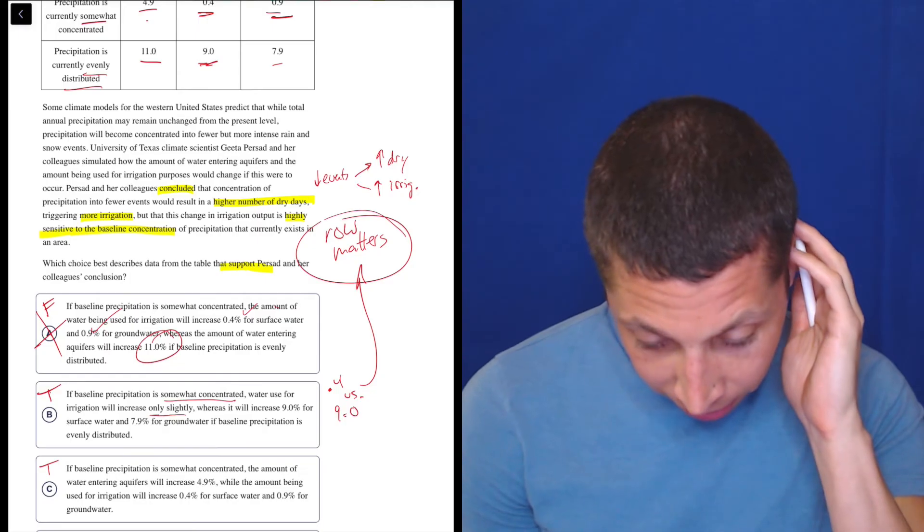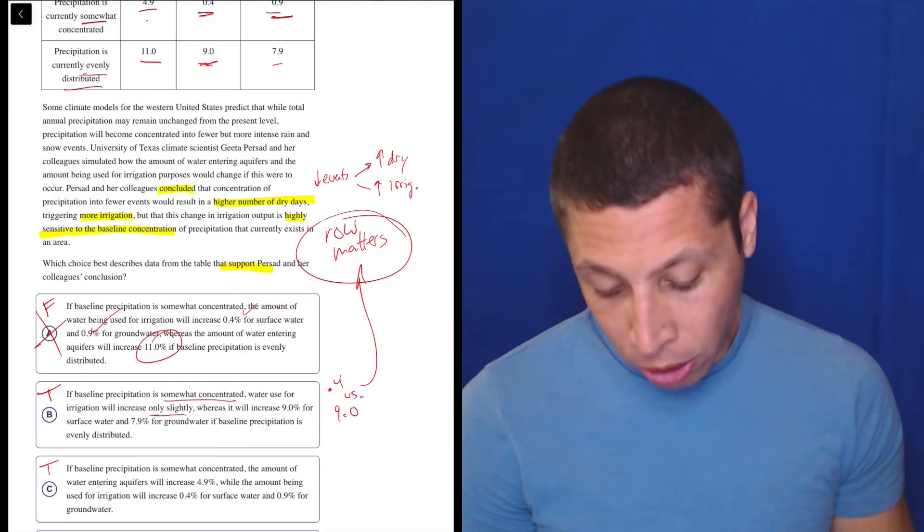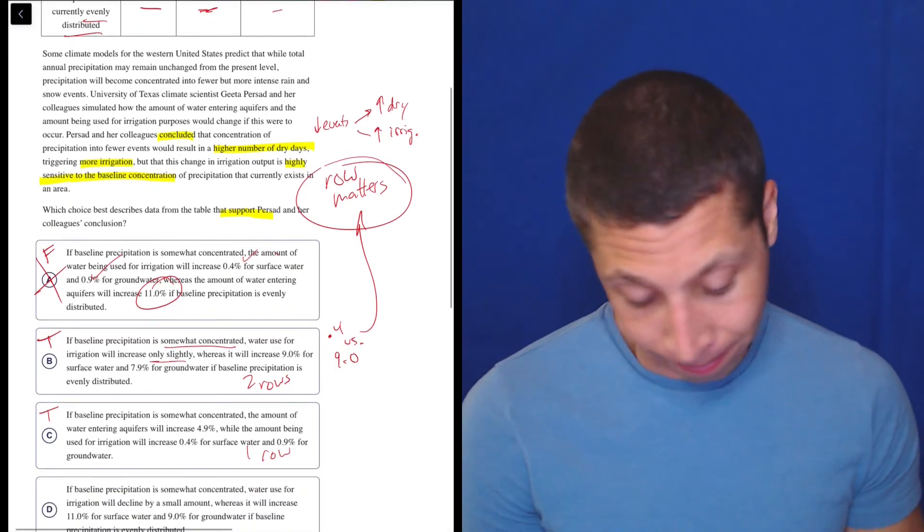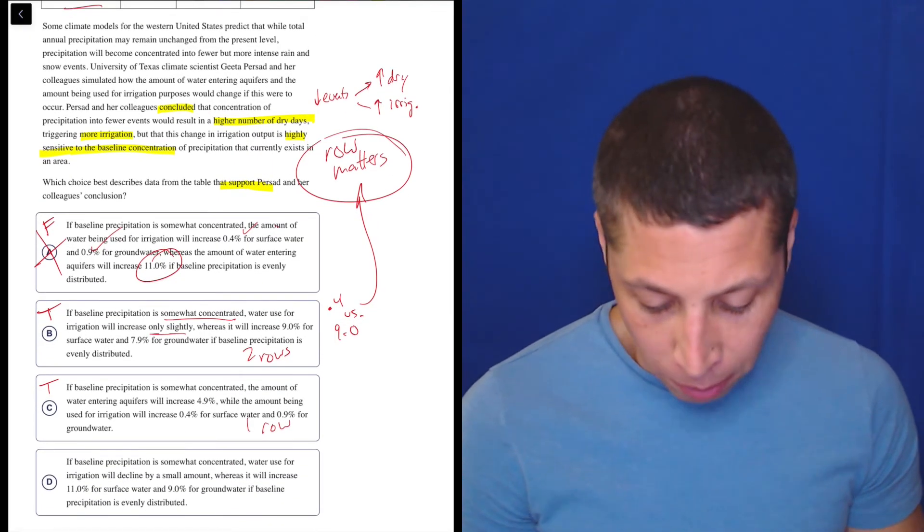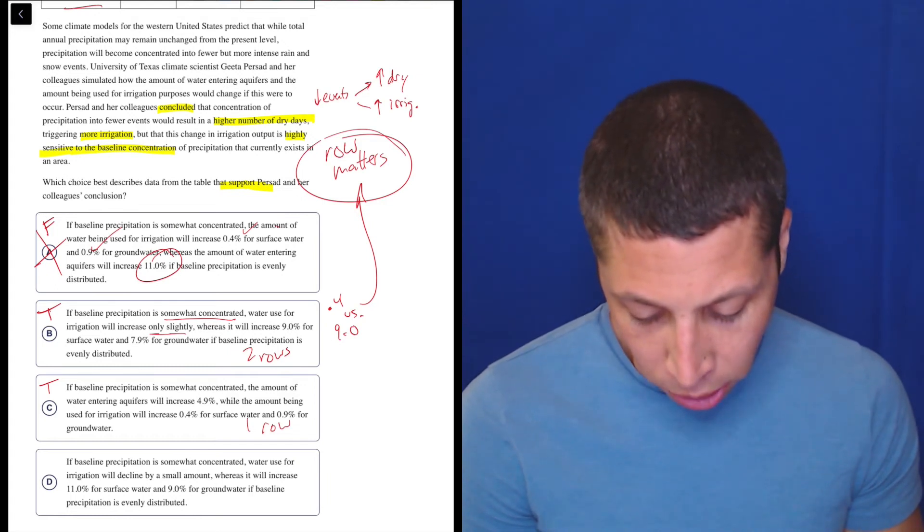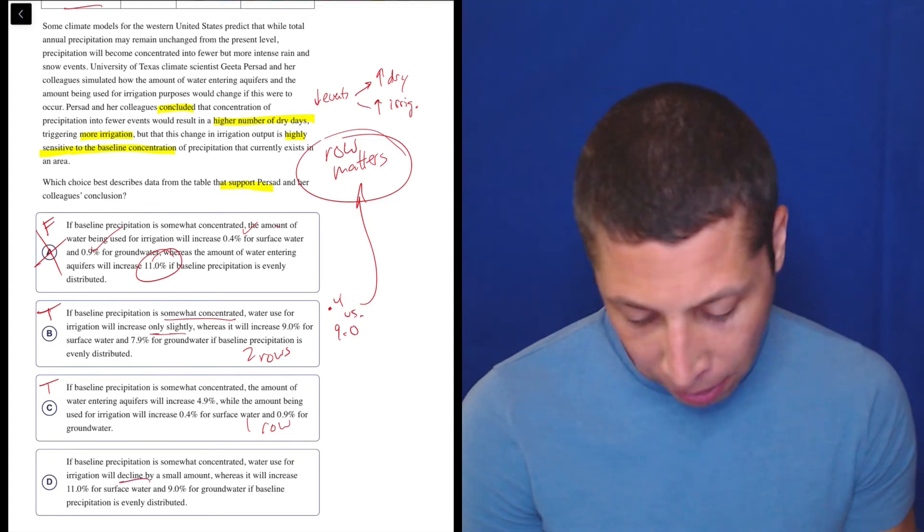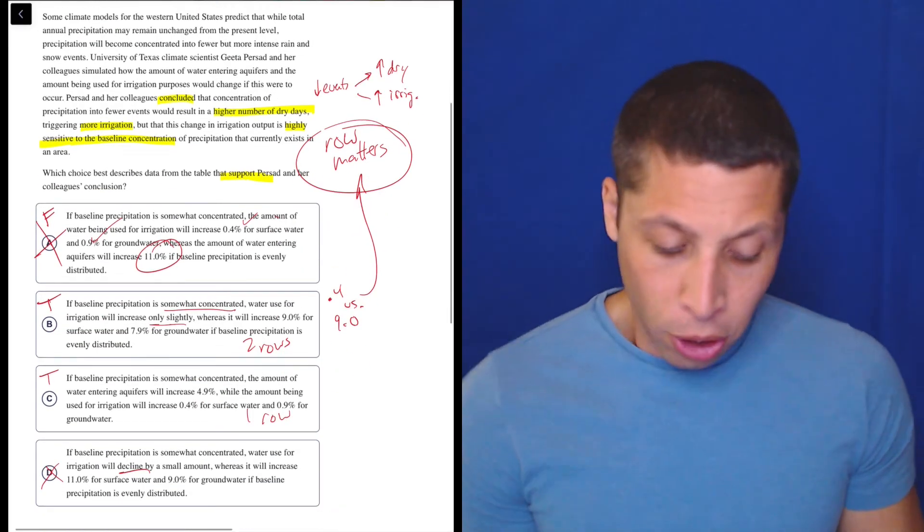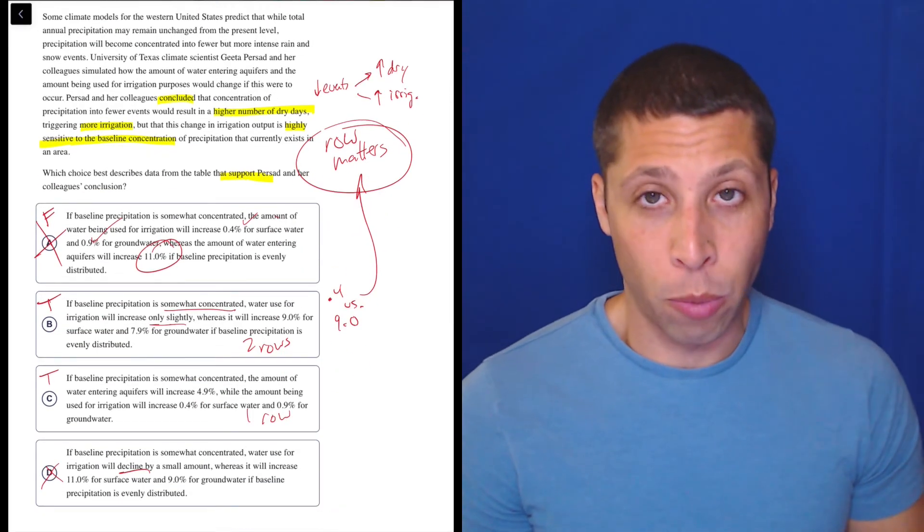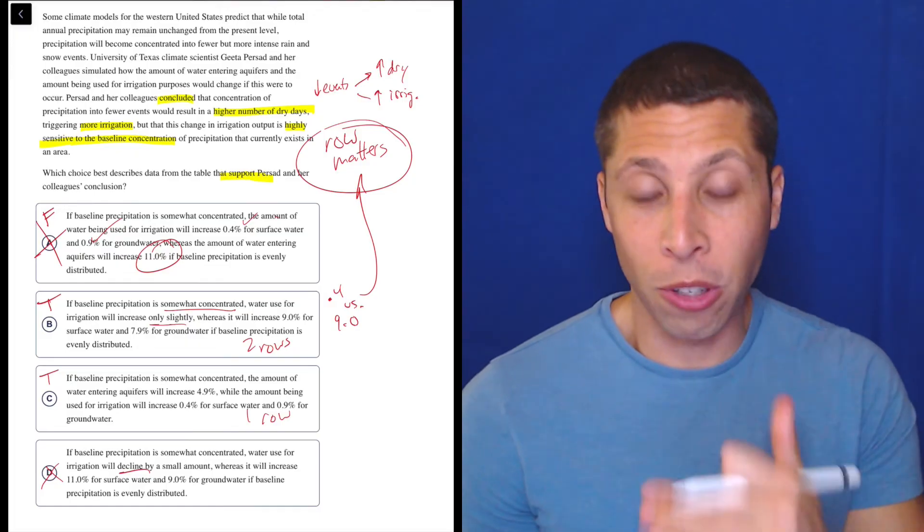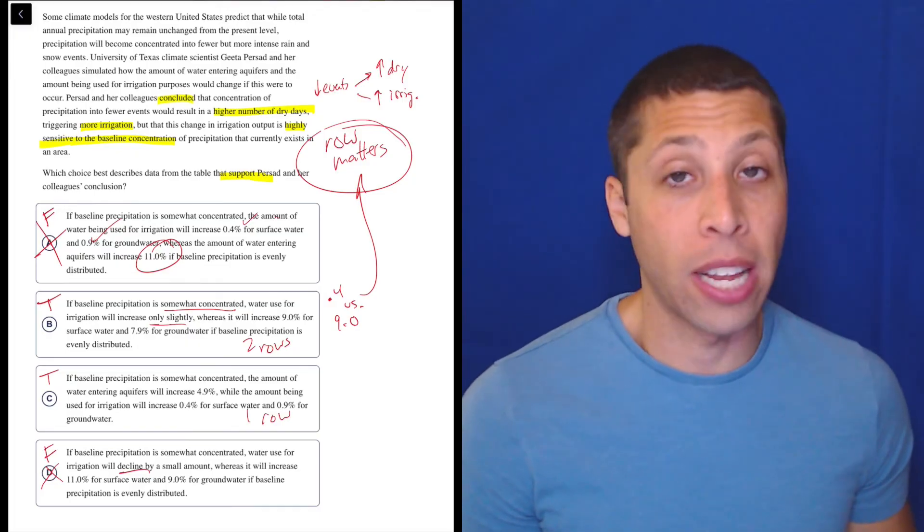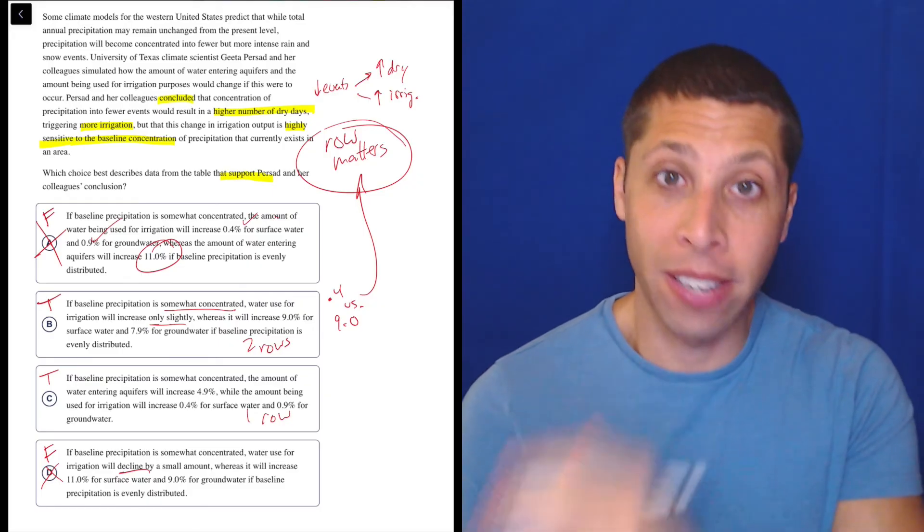But it's just only talking about one row, whereas this is talking about two rows. One row, two rows. So they're both true, but I don't know, let's look at D. If baseline precipitation is somewhat concentrated, water use for irrigation will decline by a small amount. No, there's no decline. So done. So this sometimes happens with these hard ones. Sometimes there are choices we can eliminate because they are false, they're inaccurate. So I would say D also falls in that category. They are not matching the data in the chart.